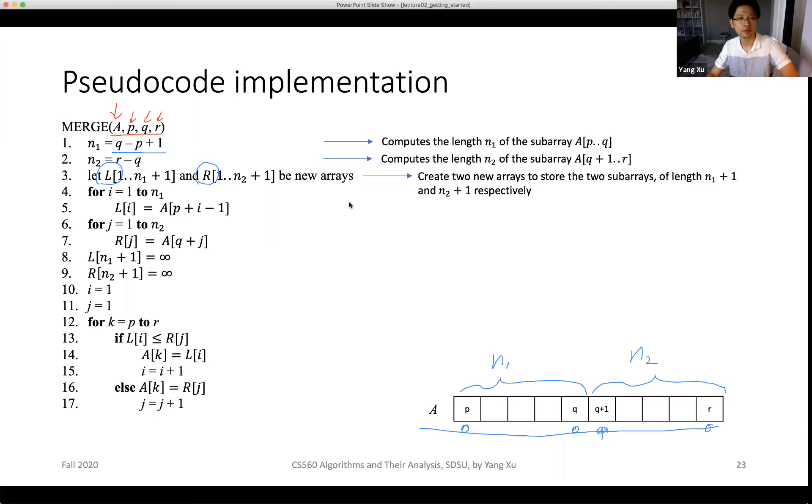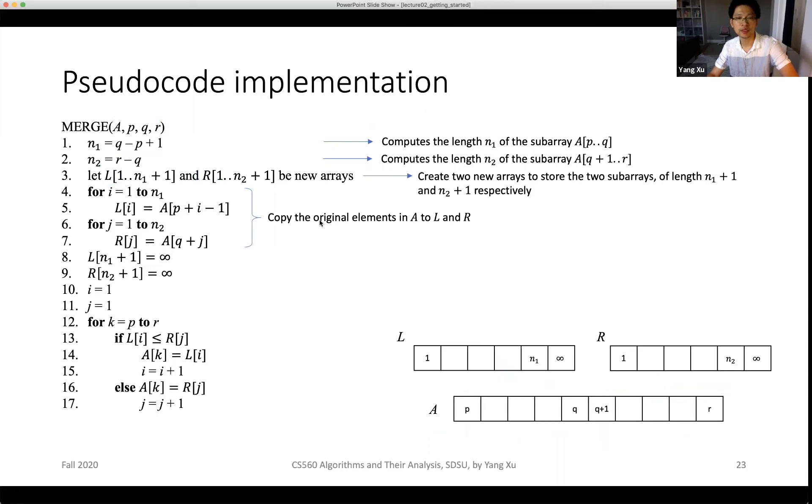Then we use two for loops to copy the original elements in A to L and R. The for loop from line 4 to 5 copies everything from the first sub-sequence to L, and the for loop from line 6 to 7 copies everything in the second sub-sequence to R.